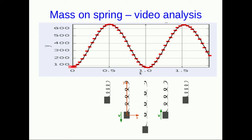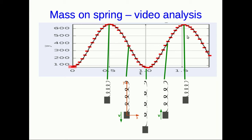Here is the video analysis of that mass on the spring, straight out of the tracker software. You can see the position versus time graph: the peak corresponds to the mass being at its highest point, and the slope of the position-time graph is zero there, so the mass is momentarily at rest. Here's where it's moving fastest — on its way down — and here it is at the bottom with the spring at maximum extension. On its way back up, it's again fastest as it passes through the middle, and momentarily at rest at its highest point. It goes fast in the middle of its oscillation and slow at the ends.